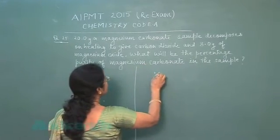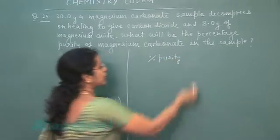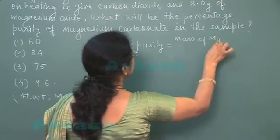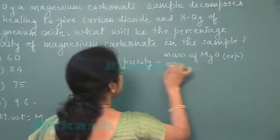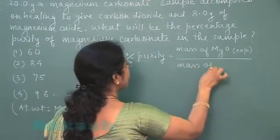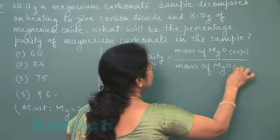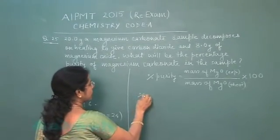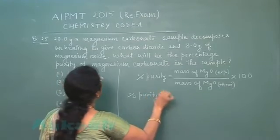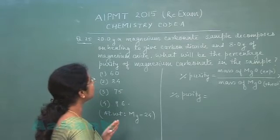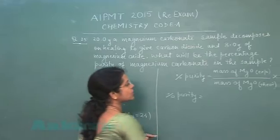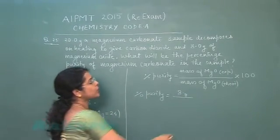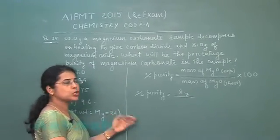In this question we have to calculate the percentage purity of the given sample, which equals the mass of magnesium oxide obtained experimentally divided by the mass of magnesium oxide obtained theoretically, multiplied by 100. It is mentioned that 20 gram of magnesium carbonate when decomposed by heating gives 8 gram of magnesium oxide, so by experiment we obtained 8 gram of magnesium oxide.